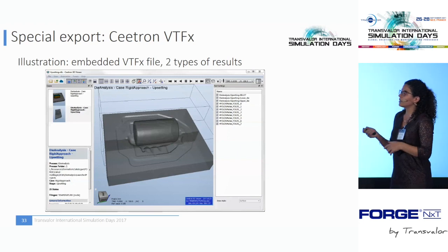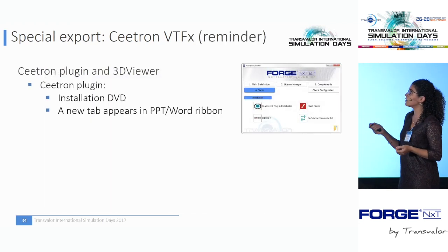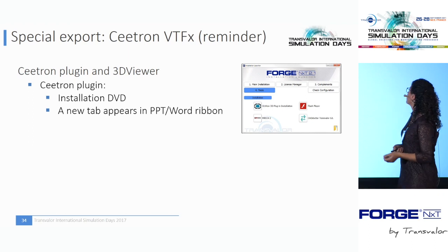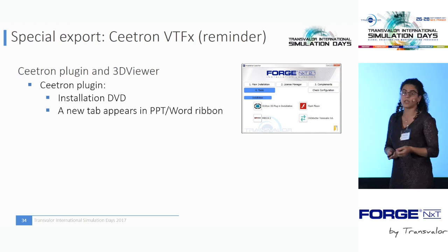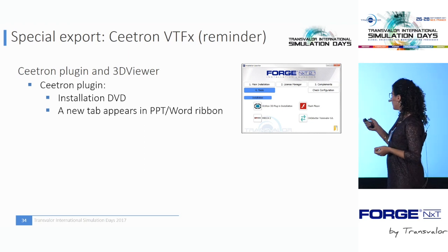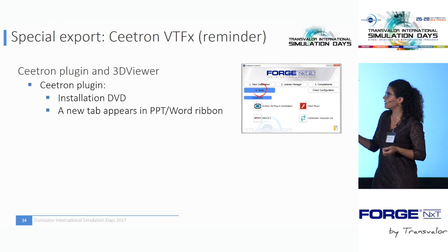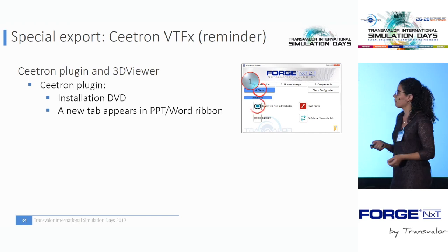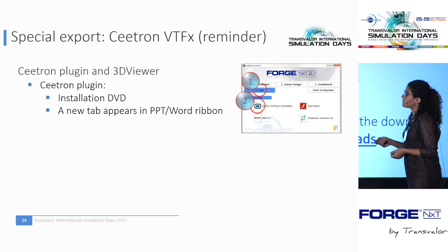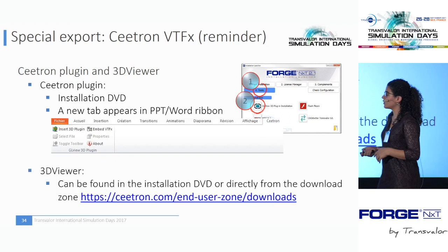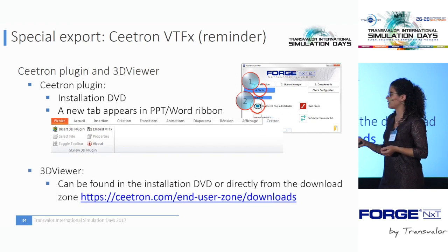For the Ceetron plugin, if you want to install it, you can find it on the installation DVD. Click on Tools, then JL View 3D Plugin Installation, and new tabs will appear in PowerPoint or Word in the ribbon under Ceetron. Click Insert 3D Plugin and select the file. For the 3D Viewer, you can find it on the installation DVD or directly from the download zone on the Ceetron website.